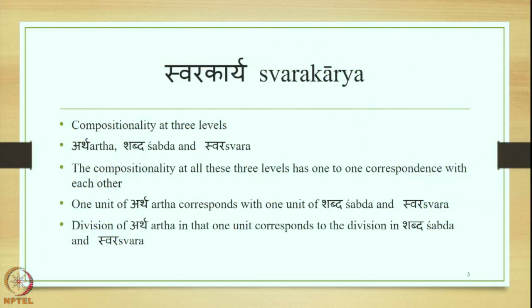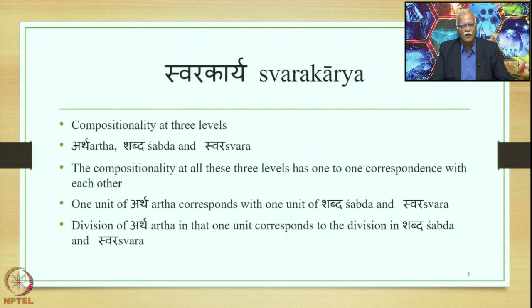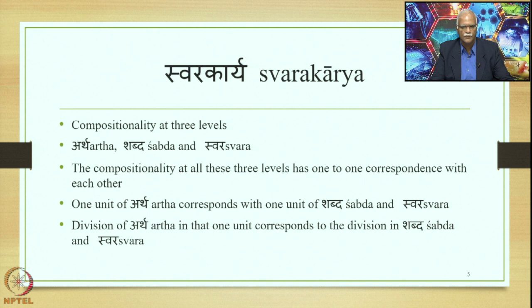We have stated this in detail in the earlier course, namely Introduction to Paninian Grammar. We said that compositionality functions at three levels in Sanskrit and Paninian Grammar, namely Artha, Shabda and Swara. The compositionality at all these three levels has a one-to-one correspondence with each other — Artha to Shabda and Shabda to Swara. One unit of Artha corresponds with one unit of Shabda and also one unit of Swara. Division of Artha in that one unit corresponds to the division in Shabda and also the Swara.